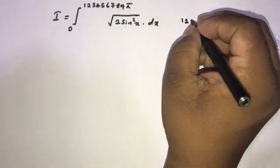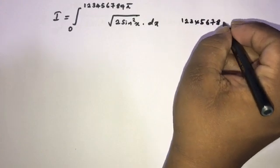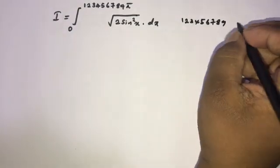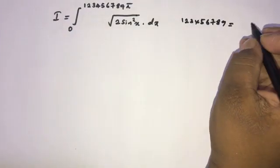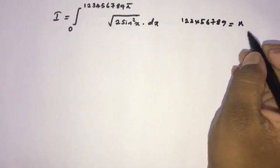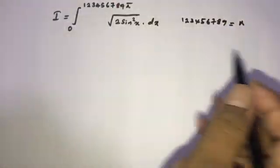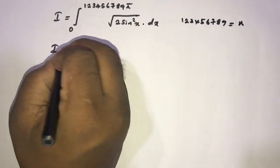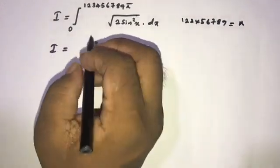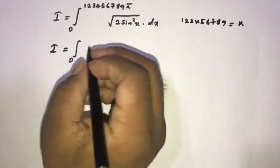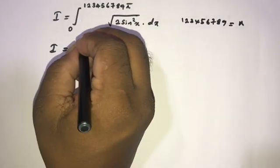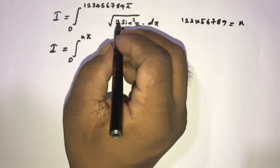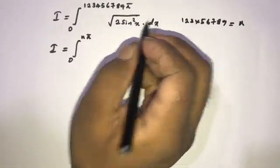I substitute n equal to 1, 2, 3, 4, 5, 6, 7, 8, 9. This is equal to n because this is continuously flowing down. So now we can write I is equal to the integral from 0 to n times 5 of the square root of 2 times sine squared of x dx.